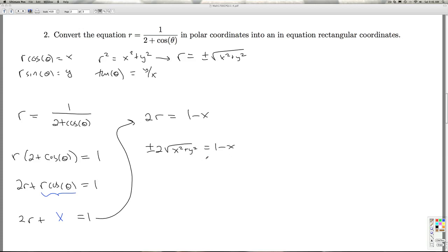Now I've got everything in terms of x's and y's. To clean this up, I can square both sides. I get plus or minus 2 squared is 4. I take the square of a square root and I get x squared plus y squared, and then here I get 1 minus x squared.